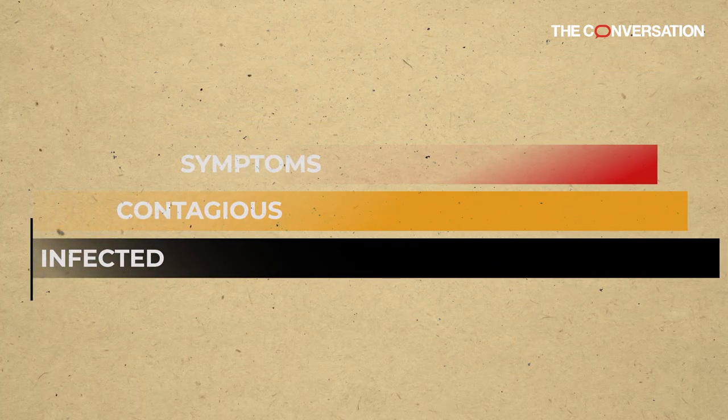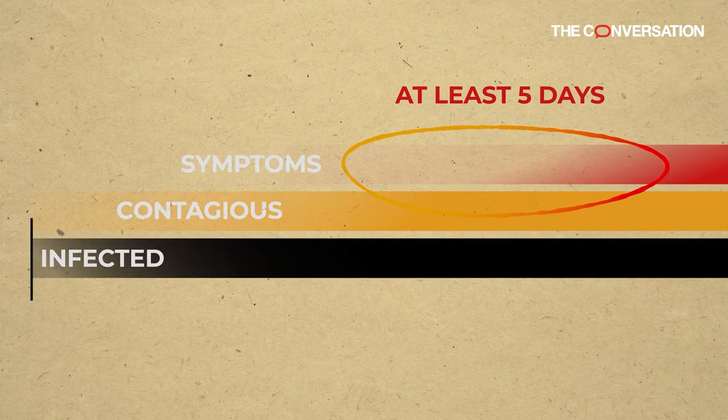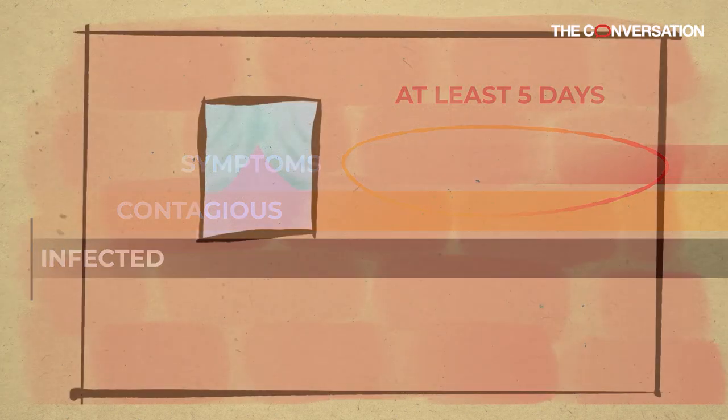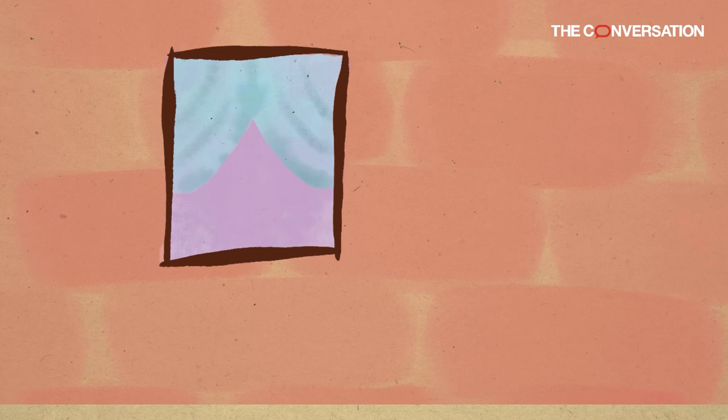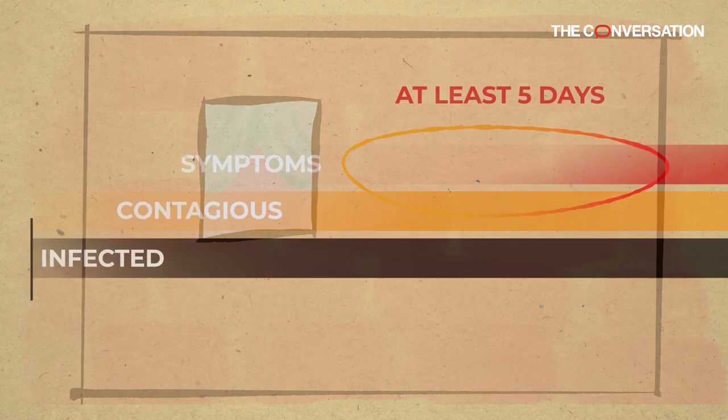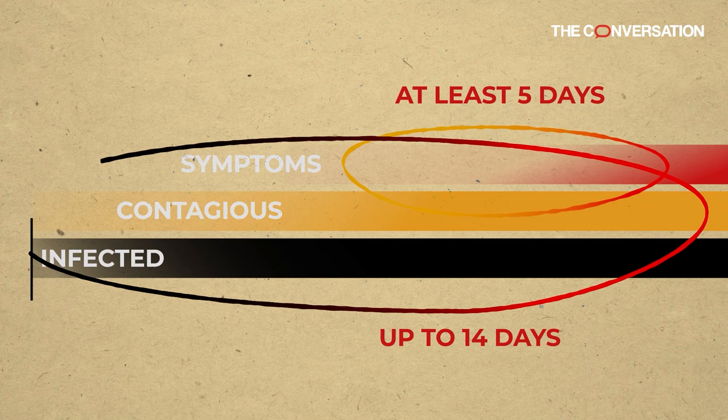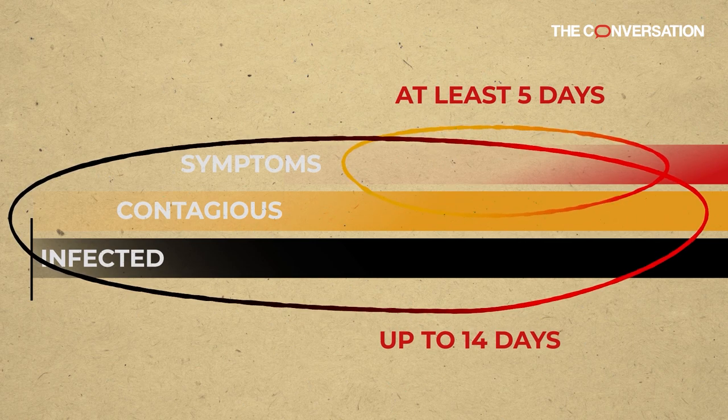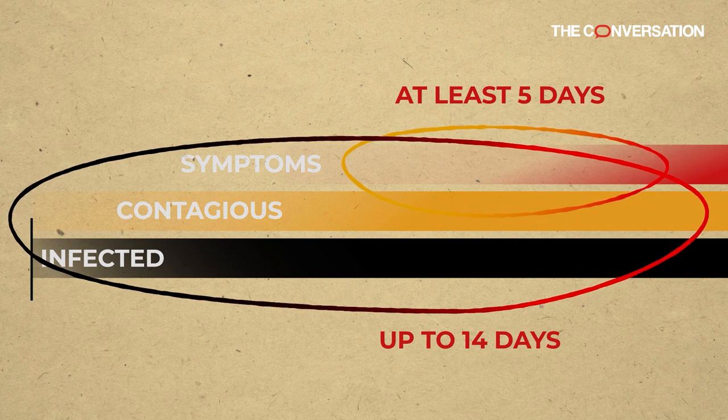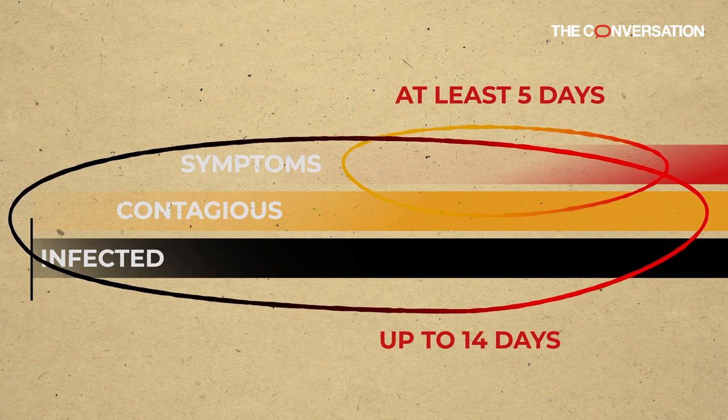People can spread the coronavirus for at least five days before they show symptoms. It's very important to take the possibility of exposure seriously and quarantine yourself if you think you were exposed. Self-quarantine should last 14 days. This covers the period of time during which a person could reasonably present with symptoms of COVID-19, the disease caused by the new coronavirus.